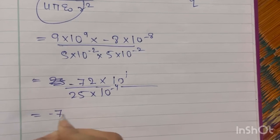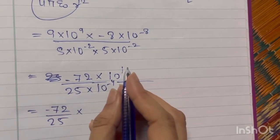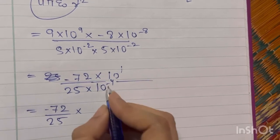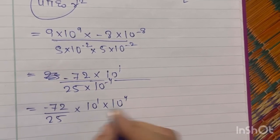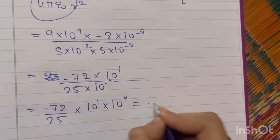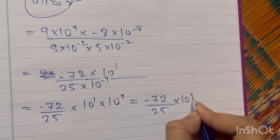So it is minus 72 upon 25. If you take this 10 raised to minus 4 in the numerator, it becomes 10 raised to 4. This 10 raised to 1 and 10 raised to 4 will make 10 raised to 5.